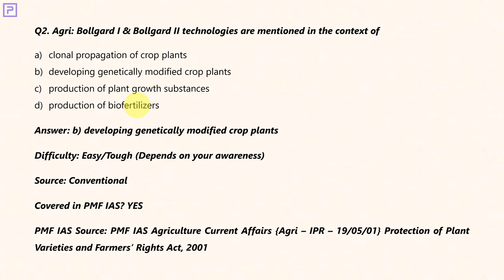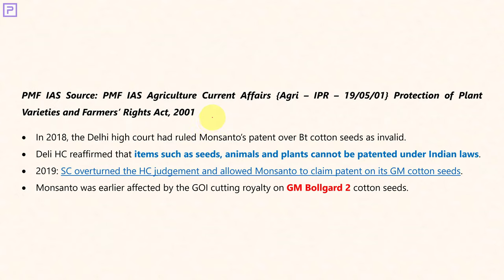Bollgard 1 and Bollgard 2 technologies are mentioned in our current affairs several times. Bollgard 1 and 2 are GM cotton seeds. So the answer is genetically modified crop plants. This is mentioned several times in PMFIS current affairs.